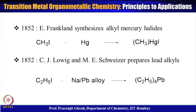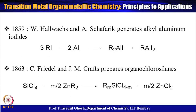In 1852, C.J. Löwig and E. Schweizer prepared lead alkyls by oxidative addition, whereby ethyl iodide was added to a sodium-lead alloy, giving tetraalkyl lead. In 1859, W. Hallwachs and A. Scherf generated aluminum alkyl iodides, again via oxidative addition between an alkyl alloy and metallic aluminum, giving dialkyl aluminum iodide and alkyl aluminum dioxide.